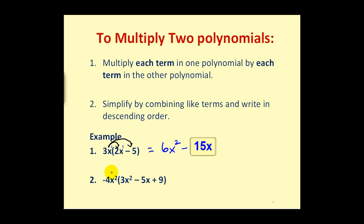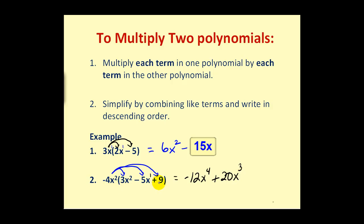For number two, we need to multiply -4x² times all three terms in the trinomial. The first product is -12x⁴. Then -4x² times -5x equals +20x³. And lastly, -4x² times positive 9 equals -36x², giving us -12x⁴ + 20x³ - 36x².